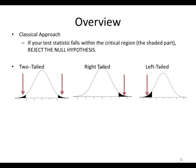The first approach is the classical approach. If your test statistic falls within the critical region — that's the shaded part — that's when we reject the null hypothesis. For a two-tailed test, if your test statistic falls on the left side or on the right side, you will reject. If it falls anywhere in the center between those two critical values, that's when you fail to reject.